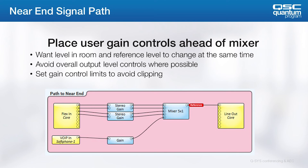When placing user controls in the system, it often seems simple to place a single gain control directly before the output block. Imagine a user in a call where the softphone receive signal is quiet, so the user increases the gain. Then a program source starts and it's incredibly loud because the single output gain control is set so high. So it's best practice to place user gain controls with reasonable limits ahead of the mixer, so that the user is controlling the level of only the source that needs to be changed.